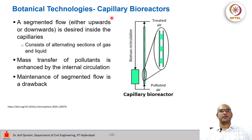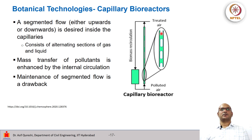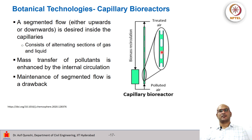Then we have capillary bioreactors. These have a segmented flow moving upward or downward, consisting of alternating sections of gas and liquid — gas, liquid, gas, liquid — circulating in this alternating pattern. The mass transfer of pollutants is enhanced by this internal circulation. However, this technology is still developing, and maintaining the segmented gas-liquid-gas-liquid flow is not easy.